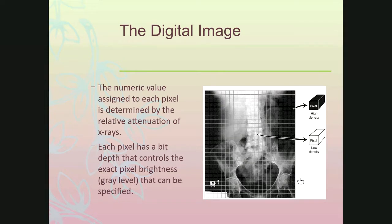Each pixel has a bit depth, and that controls the exact pixel brightness that can be specified. The bit depth actually determines the gray level that can be demonstrated.